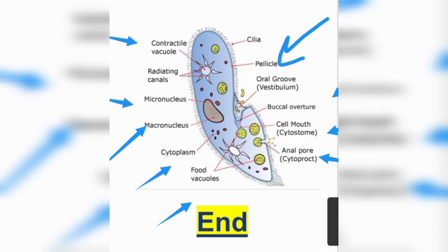Now let's talk about nutrition in paramecium. When there is a food particle, paramecium uses cilia movement to trap the food particle. After the food particle is trapped, it enters the body, and the same process of digestion, absorption, assimilation, and egestion is repeated, just as we discussed in amoeba. In this way, the nutrition of paramecium is also completed. Thank you.